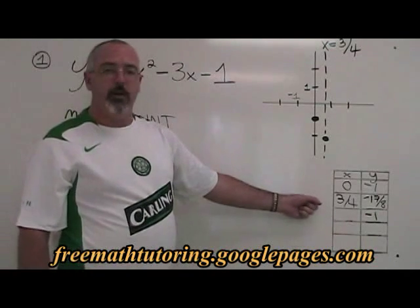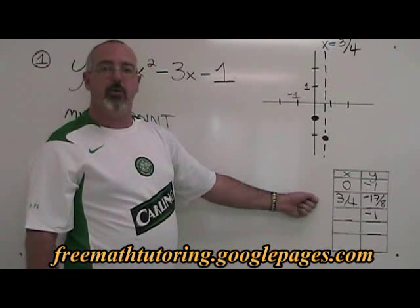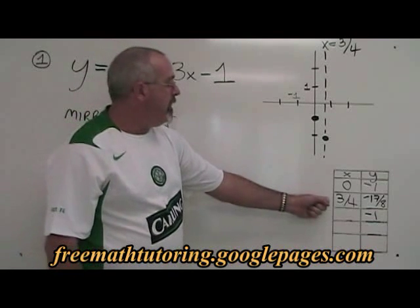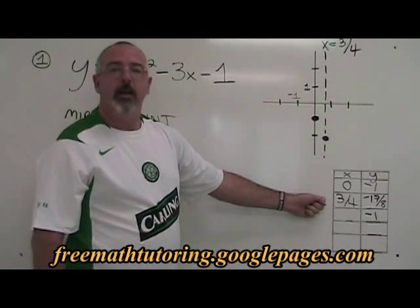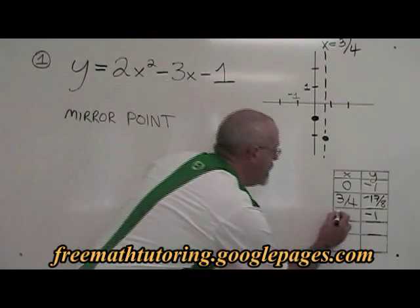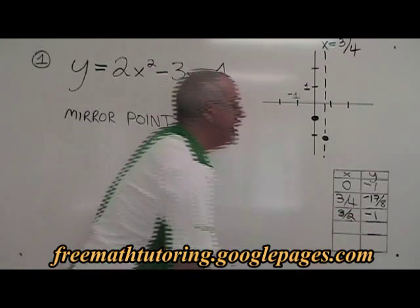The x-coordinate of the mirror point is double the x-coordinate of the vertex. Our vertex is 3 quarters, and 2 times 3 quarters is 3 halves, or 1 and a half.